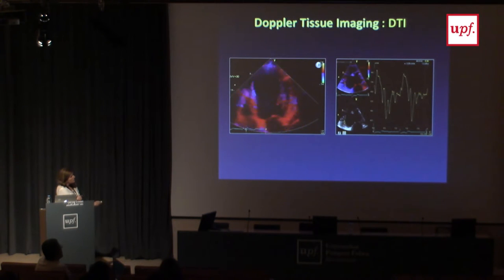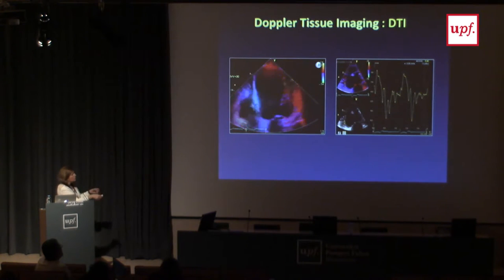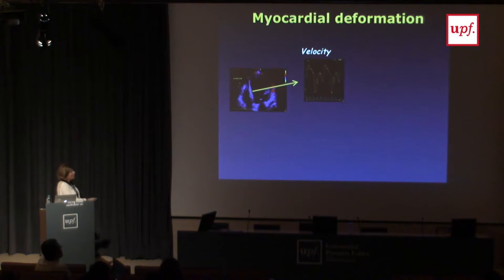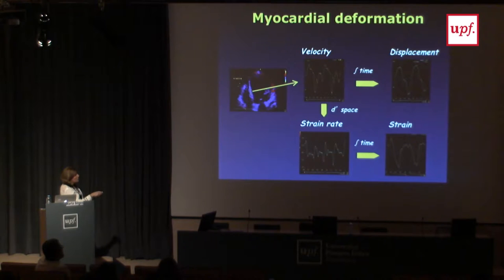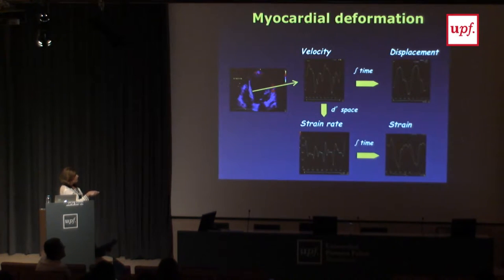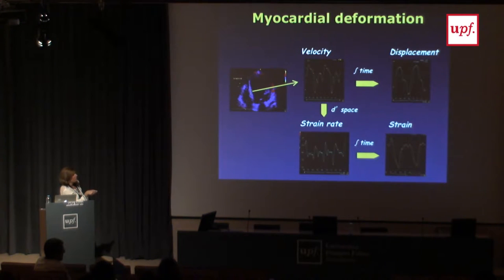Typically we see myocardial motion in systole towards the apex, then two waves — the E wave and the A wave — similar to what we look for in filling: early relaxation of the ventricle and then atrial contraction. From this Doppler color imaging we can derive velocity, displacement, strain rate, and strain. DTI is mainly used clinically to analyze annular velocities, and sometimes to evaluate strain and strain rate, particularly for hypertrophic myocardial disease.